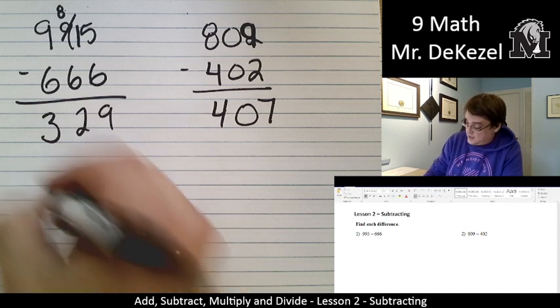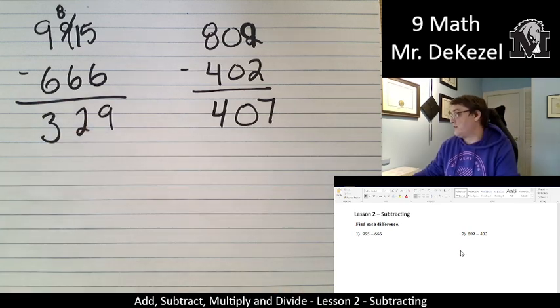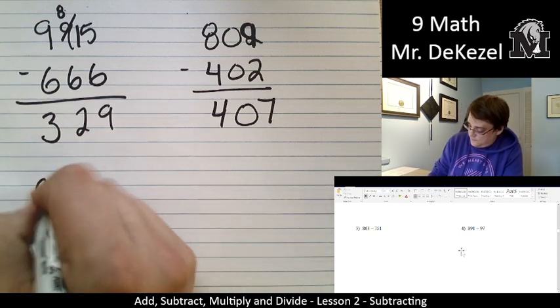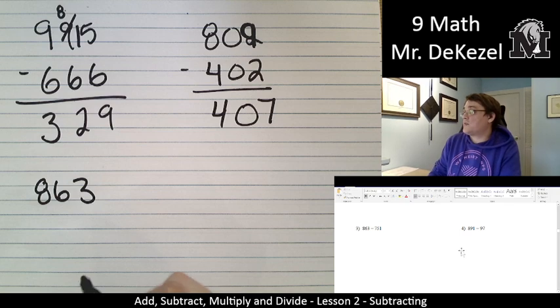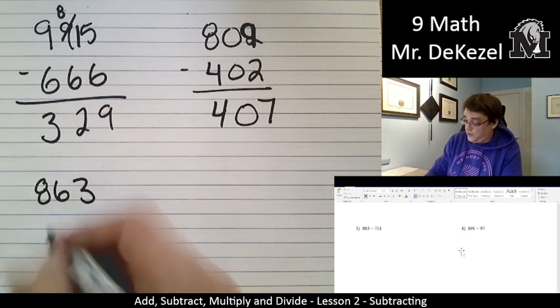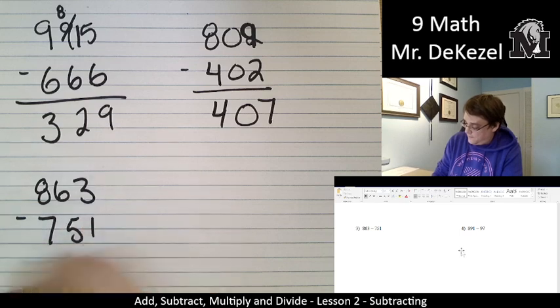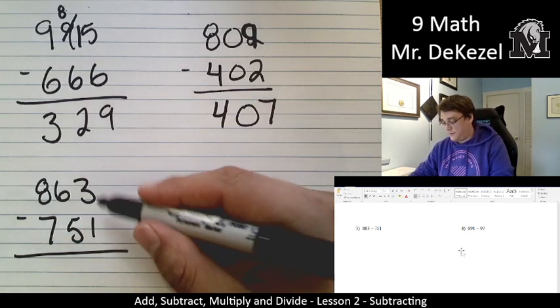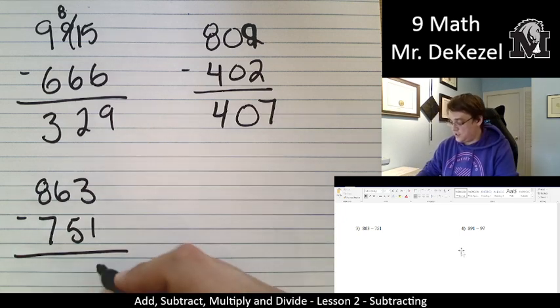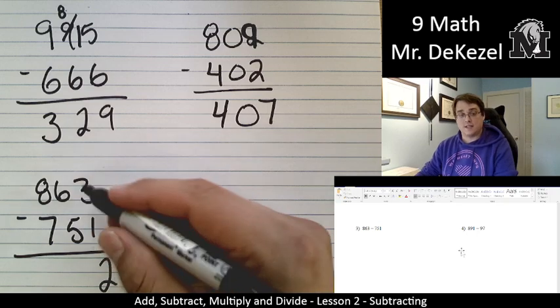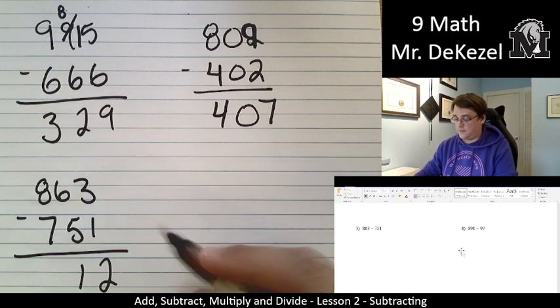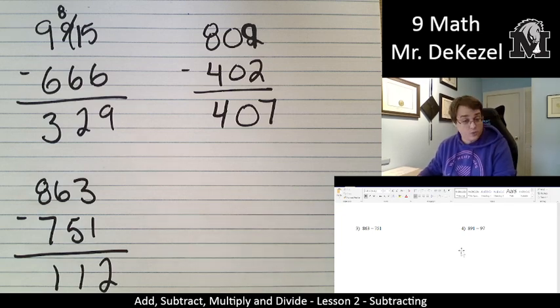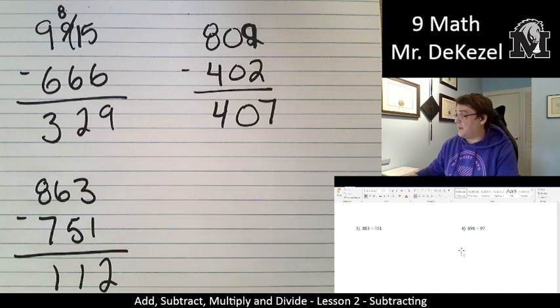Nice and easy. Let's do another one. 863 subtract 751. We take the top number and subtract the bottom one. So three minus one is two. Six minus five is one. And eight minus seven is one. That was nice and simple as well. 112 is our answer.